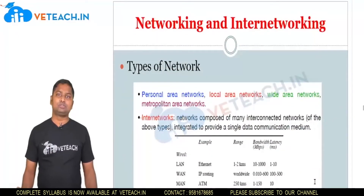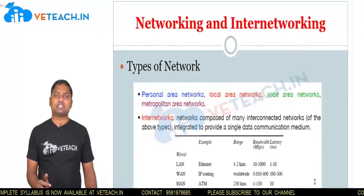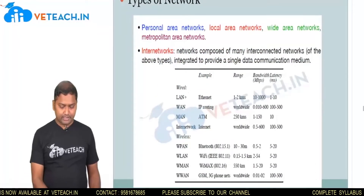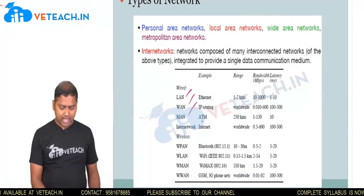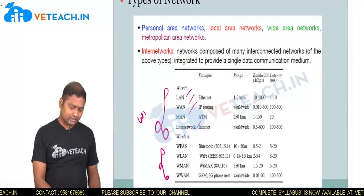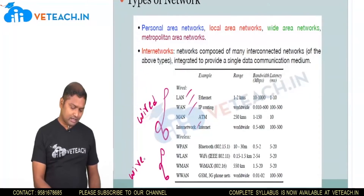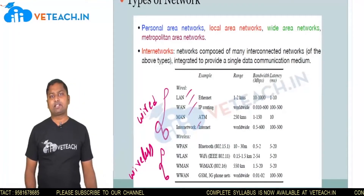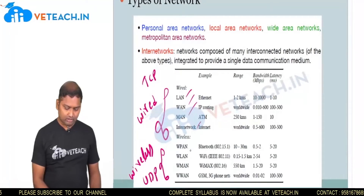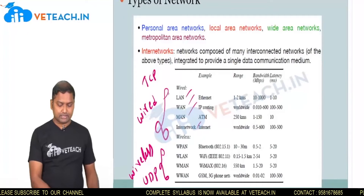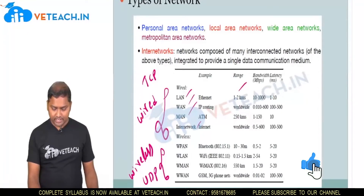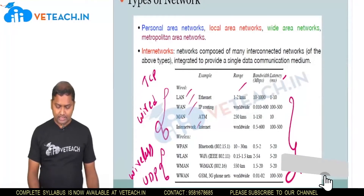So, we are establishing or constructing a network. How many types of networks are there? Types of networks include LAN, WAN, MAN, and internetwork. Some are wired and some are wireless. In terms of protocols, there is TCP and UDP. These are characterized by range, bandwidth, and latency — these are the data properties.